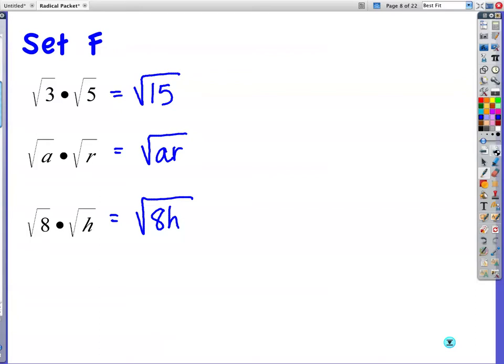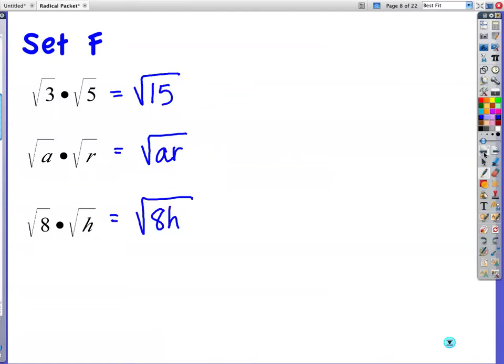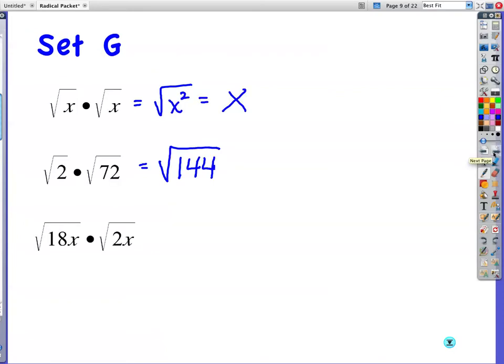Moving on to set G. Now I have it again. Square root of X times square root of X. That is just, you could write square root of X squared, but most of us should be catching on. It's just X. Square root of 2 times square root of 72 is the square root of 144. See how we use the skill that we had on the previous? I took square root of A times square root of R. I write it underneath one radical. So when I write it under one radical here, I get 144. Oh, wait, the square root of 144 is just plain old 12. I do the same thing here. I'm going to write it underneath one radical. 18 times 2. Deal with my numbers first. I get 36. Now I'm dealing with my X's. Wait a minute. The square root of 36 is 6. The square root of X squared is just X.